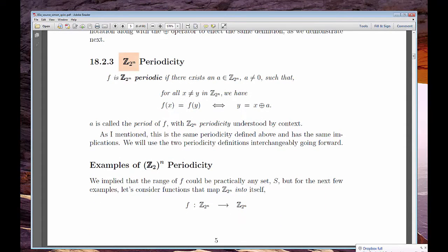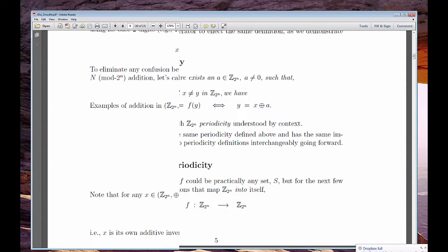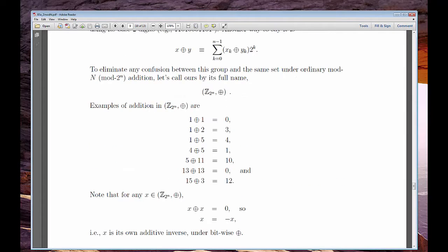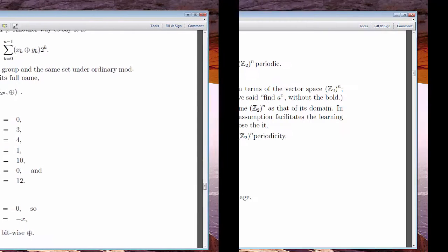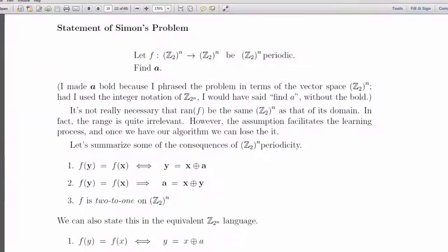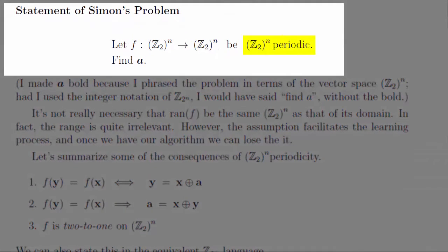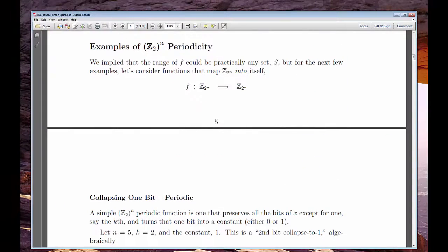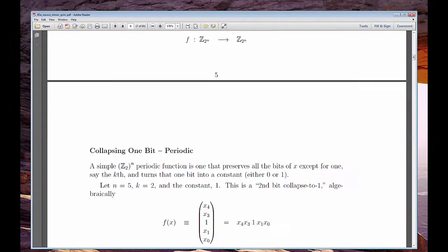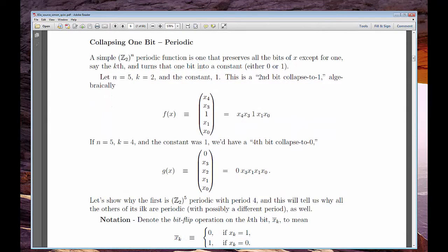the integers Z₂ⁿ and the vector space Z₂ all to the n. If you'll recall, they had an unusual mod 2 component-wise addition. Well, in Simon's problem, we're given a function that's periodic in this Z₂ⁿ sense, and we're asked to find a period a. You'll read the precise definitions of all these terms and study some short examples to reinforce the concepts.